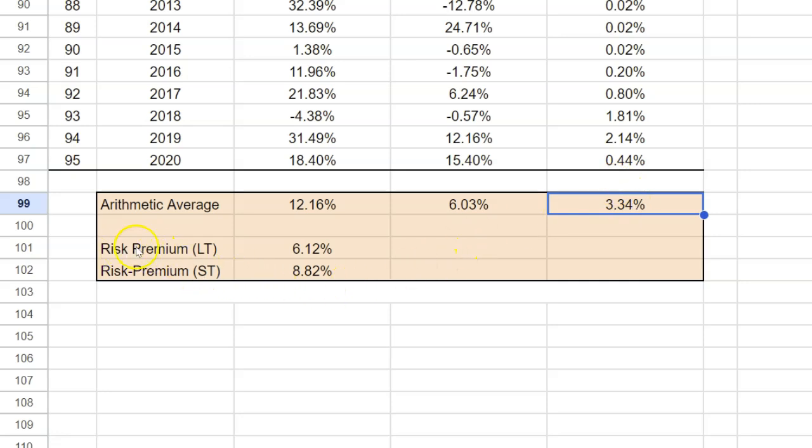And based on these numbers, therefore, you can actually come up with an estimate of historical market risk premium. If you look at the difference between these two numbers, the historical market risk premium has been about 6.12%. However, if you look at the difference between 12.16% and 3.34%, this estimate comes out to about 8.82%. Now, you might be wondering which of these two should you use? Well, actually, it depends on the situation. I'll talk about it in just a minute.